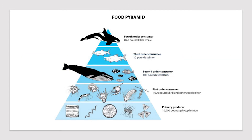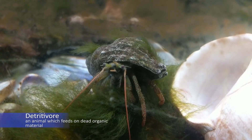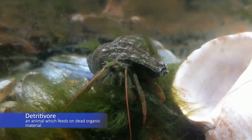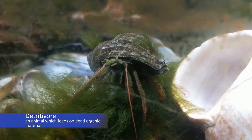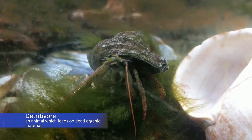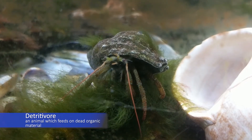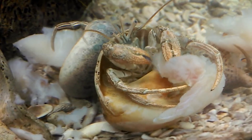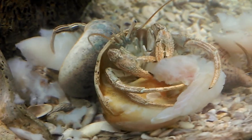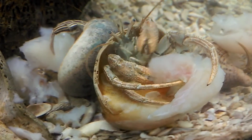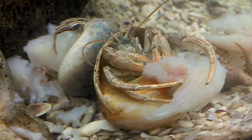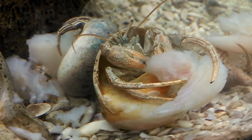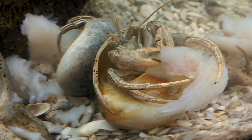Biomass that isn't eaten by consumers is processed by decomposers such as bacteria and detritivores, including some invertebrates and fish. Detritivores capture and recycle nutrients that otherwise might be lost to the ecosystem and make them available to organisms at higher levels of the food web. In the Puget Sound, detritivores are one of the most important groups supporting higher trophic levels.